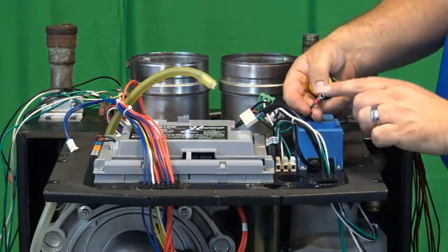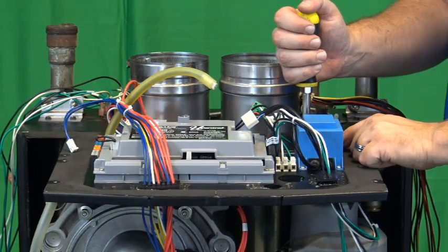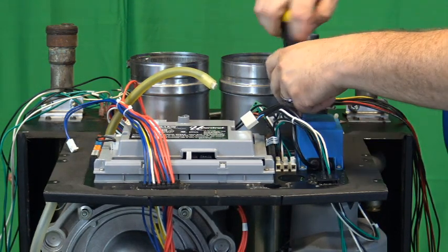There is also a ground wire, so we will remove the screw out of the bracket in the back of the transformer and put it through the I terminal to ground out the harness.